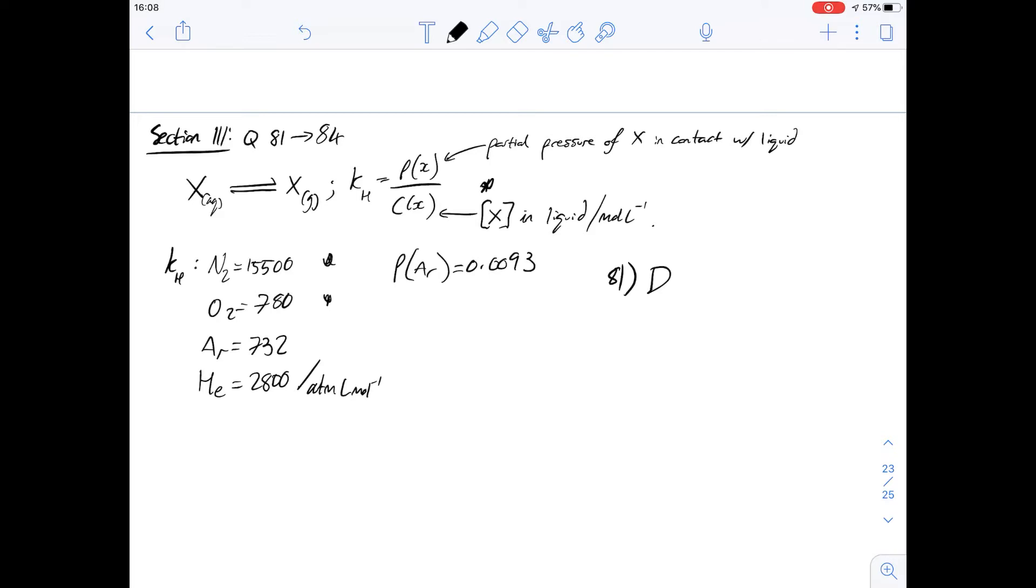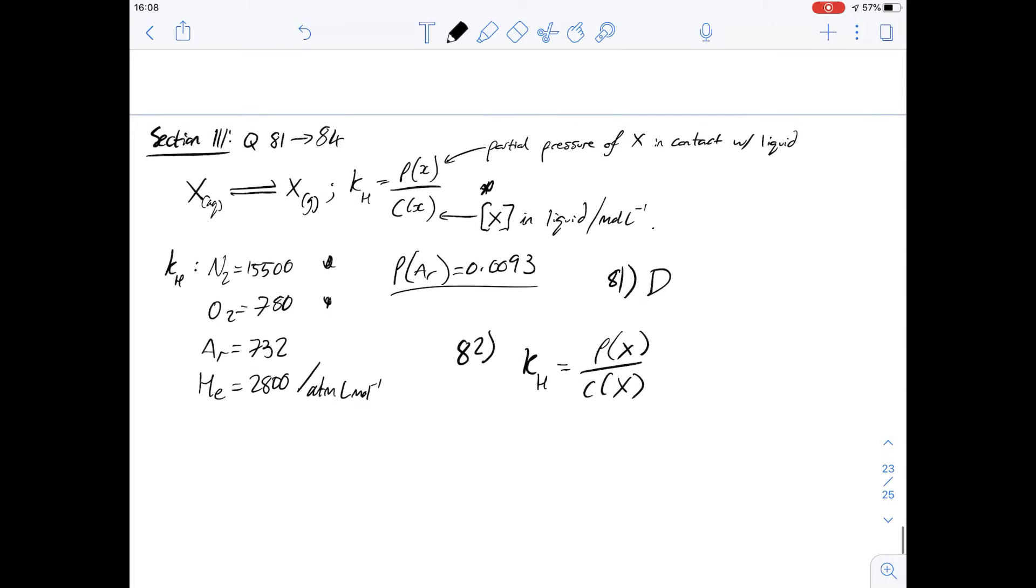If we look at 82, then it says the partial pressure of argon in the atmosphere is 0.093 atmospheres, which I've written here. Which of the following is the best estimate for the equilibrium constant or concentration of argon in the blood plasma? So we're going to use the equation that we're given here for Henry's constant, which is KH equals the pressure of x over the concentration of x.